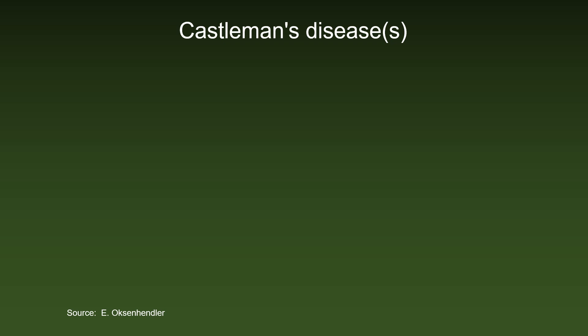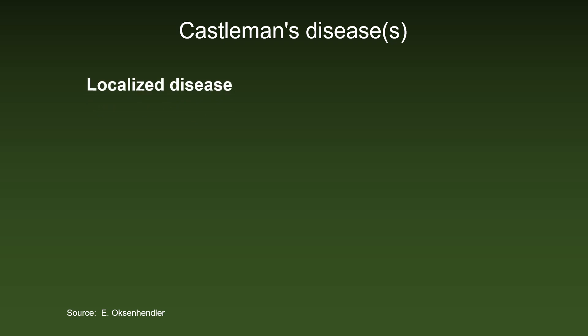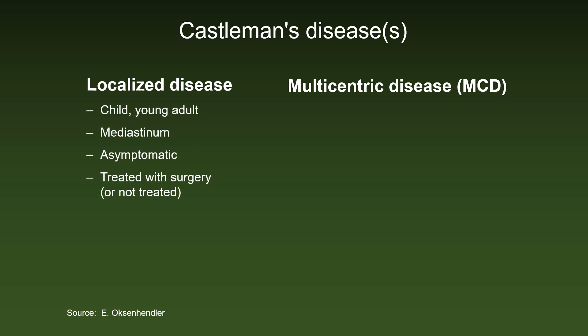It might be better to talk about Castleman's diseases than Castleman's disease, because the localized Castleman disease is very different from the multicentric Castleman disease, MCD. Localized disease occurs in children or young adults. The preferred location is the mediastinum. It is asymptomatic, and it is treated with surgery, usually for diagnostic purposes, or not treated at all.